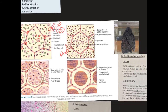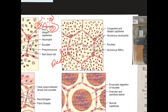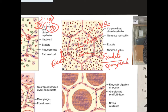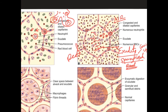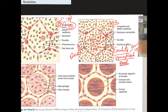In red hepatization, the number of neutrophils increases, more RBCs enter, and fibrin strands appear. Air is completely replaced by exudative fluid. Due to this, the lung becomes airless, firm, and hard, and it looks red. Because the consistency becomes like that of the liver, it is called hepatization — specifically red hepatization. The microscopic changes are increasing neutrophils, fibrin, and RBCs.